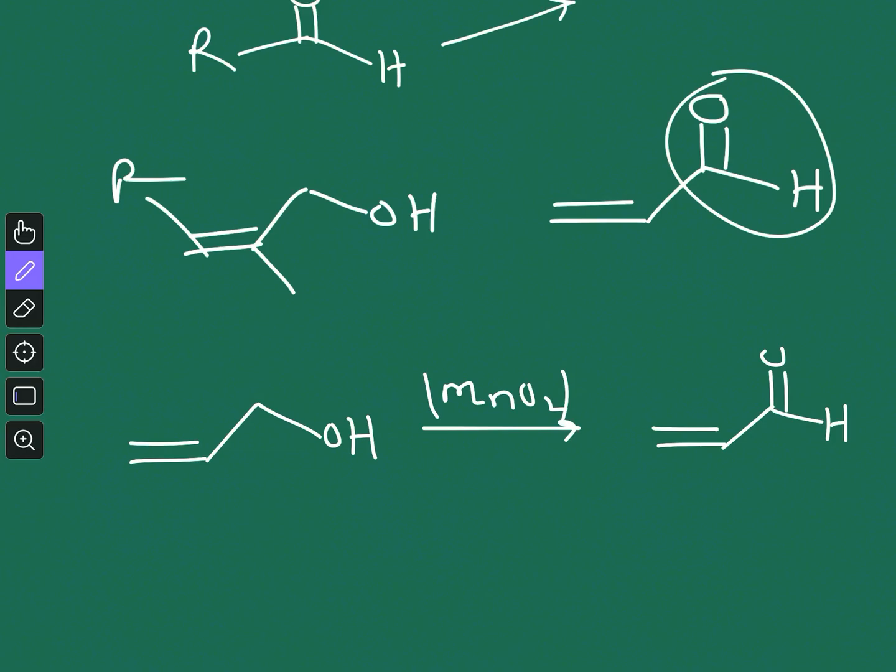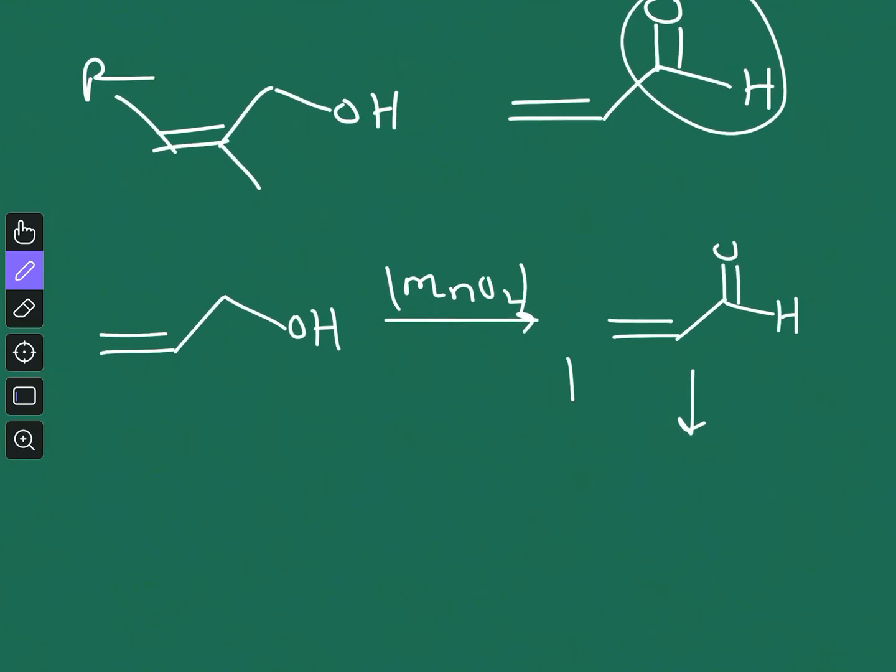Now if you start from the aldehyde, allylic aldehyde, the reaction will start from here. But if you use the alcohol you have to do one extra step. From here the reaction is same. So now whatever steps I will show, that is applicable both for allylic aldehyde and allylic alcohol.